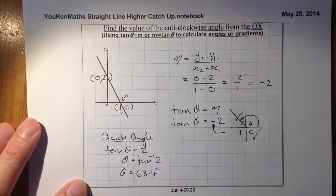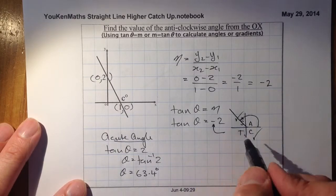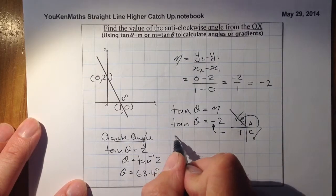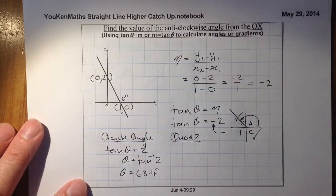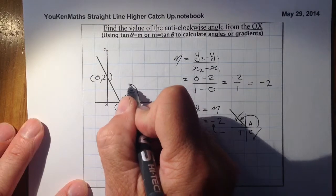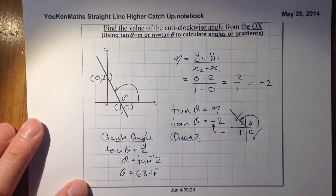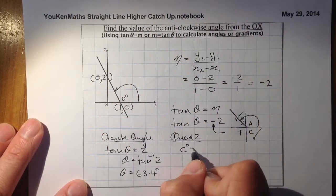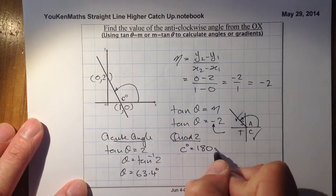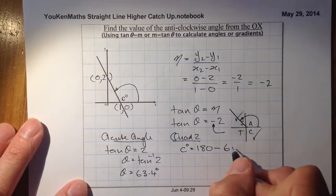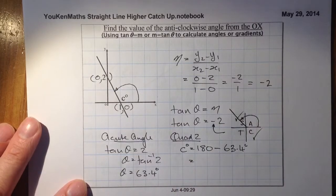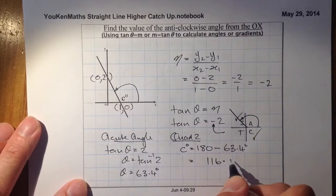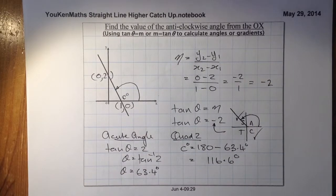To find the quadrant 2 answer — which gives angle c — I calculate 180 minus 63.4 degrees. That gives c equal to 116.6 degrees. And that completes that question.